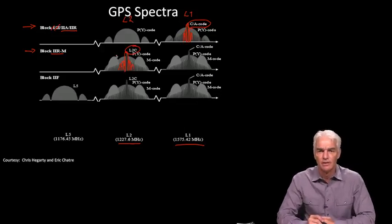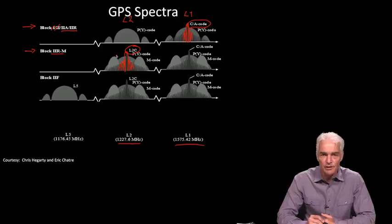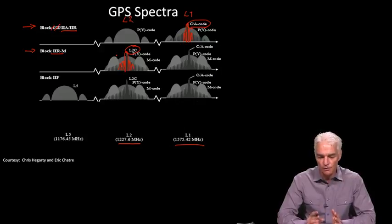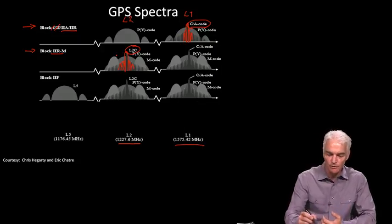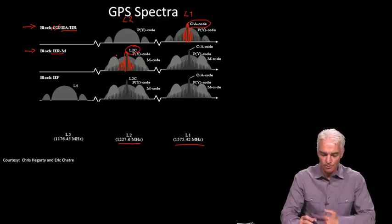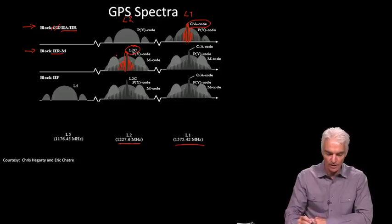So the US Air Force added a civilian code on the L2 frequency, and this is primarily to support high precision receivers. And by having the two frequencies, you can get better precision. And the kind of receivers that do centimeter level accuracy almost exclusively are dual frequency receivers. So all cell phones are single frequency receivers at L1, and all the high precision receivers, like for surveying, are dual frequency receivers that use L1 and L2.